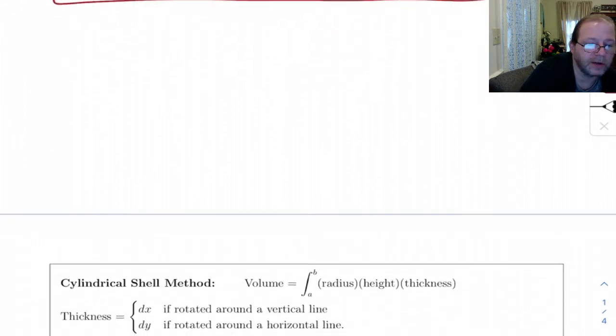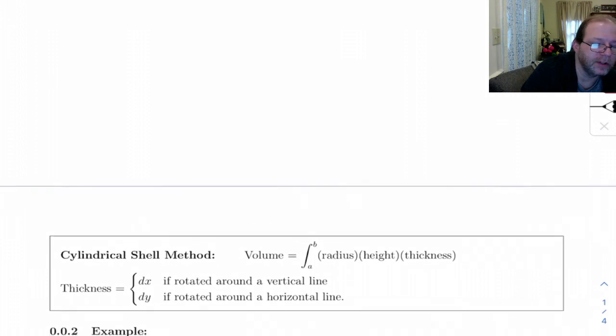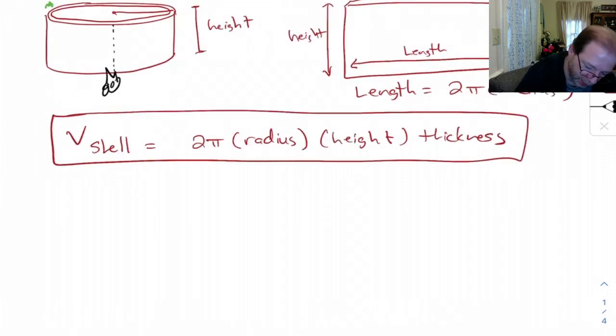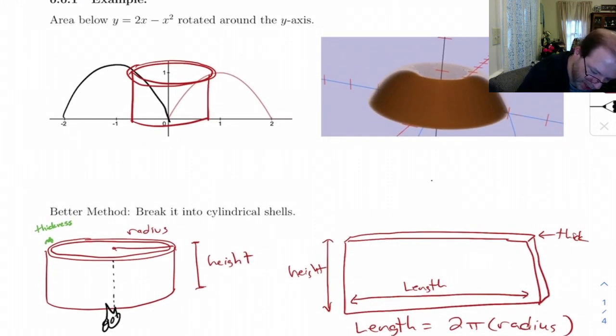Let's see, if we scroll down here, I've got this written down. Volume of the solid object is going to be integral from a to b of radius times height times thickness. And the thickness is dx if you rotate it around a vertical line. And notice that's what we've got up here. If you go from one side of this shell to the other, it's a tiny change in x.